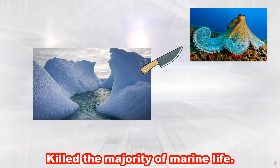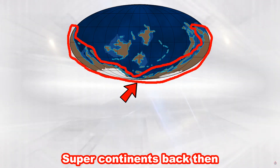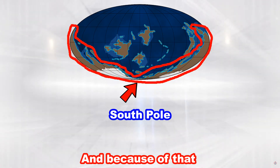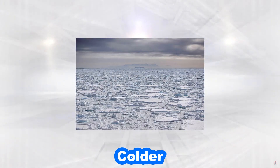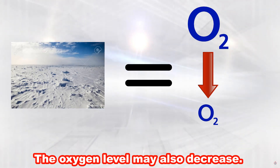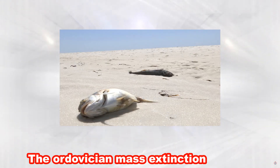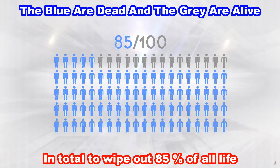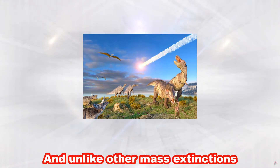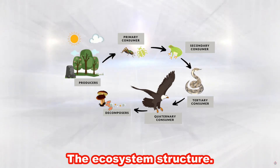If it was coldness that killed the majority of marine life, it is theorized that one of the super continents back then moved to the polar region, causing temperatures to drop. The reason it could be both is because sometimes when a climate gets colder, the oxygen level may also decrease. The Ordovician mass extinction didn't happen instantly — the entire extinction took about 2 million years to wipe out 85% of all life. And unlike other mass extinctions, this one didn't majorly change the ecosystem structure.